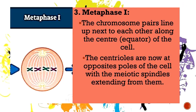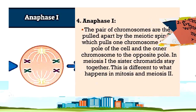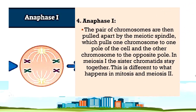In metaphase 1, the chromosome pairs line up next to each other along the center equator of the cell. The centrioles are now at opposite poles of the cell with the meiotic spindle extending from them. In anaphase 1, the pair of chromosomes are then pulled apart by the meiotic spindle, which pulls one chromosome to one pole of the cell and the other chromosome to the opposite pole. In meiosis 1, the sister chromatids stay together — this is different from what happens in mitosis and meiosis 2.